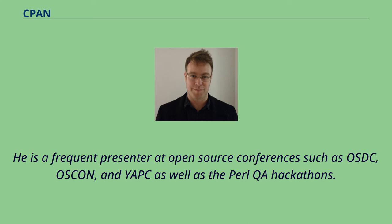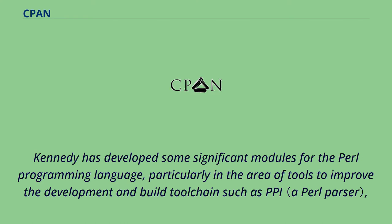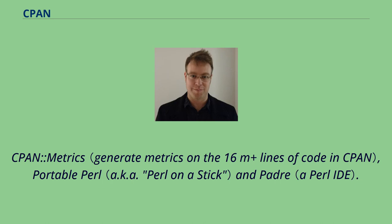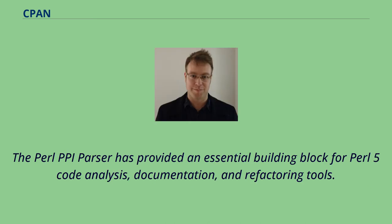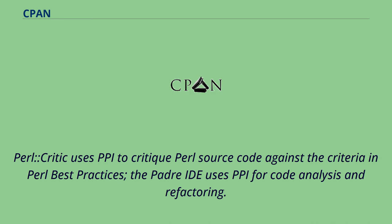Kennedy has developed some significant modules for the Perl programming language, particularly in the area of tools to improve the development and build toolchains, such as PPI, CPAN::Metrics, Portable Perl, and Padre. He has also been a strong advocate of platform equality for Perl on Windows, and started both the Win32 Perl wiki and the Strawberry Perl distribution for Windows. The Perl PPI parser has provided an essential building block for Perl 5 code analysis, documentation, and refactoring tools. Perl::Critic uses PPI to critique Perl source code against the criteria in Perl Best Practices, and the Padre IDE uses PPI for code analysis and refactoring.